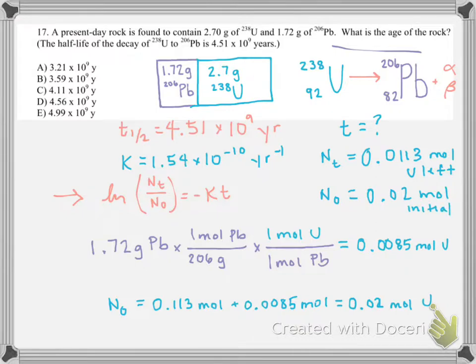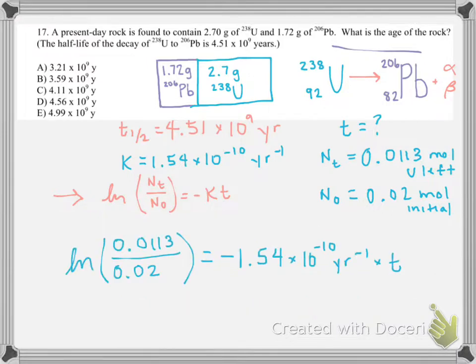So now we have everything that we need in our integrated first order rate law expression. And we'll go ahead and solve for T. So I went ahead and plugged all of our variables into the natural log expression. And now we can go ahead and solve for T. So when you solve or evaluate this natural log, you get that this side is equal to negative 0.552. And so that's equal to R negative K T. And then you just divide the left side by K. And find that the answer is B.